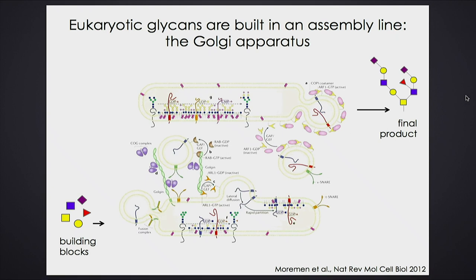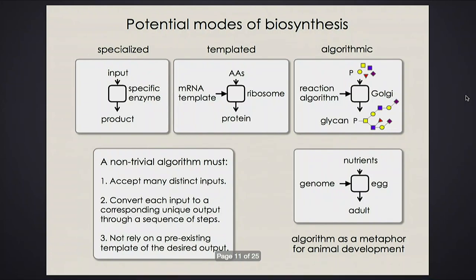The building blocks — individual sugar monomers — are passed into the plates, something happens inside to put these sugars together and attach them to a protein, and then the whole thing is packaged into a vesicle and sent to the next plate. After going through one, two, three, four plates it comes out the other side as the final product — like a factory. The question is: how does the system work? What can it do, and what can it not do?